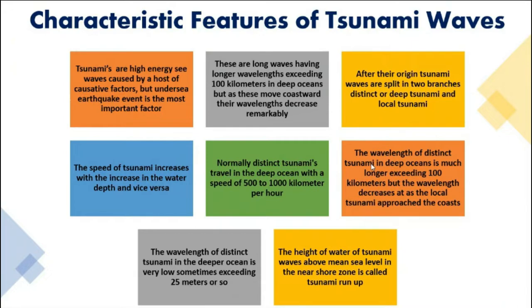A wavelength of more than 100 kilometers makes it very difficult to detect such waves when there is already turbulence in the ocean from tidal movements, cyclones, and other phenomena. In deep oceans, the wavelength is more than 100 kilometers, but as the waves move toward coastal areas, the wavelength decreases remarkably and the amplitude of the tsunami wave increases when it approaches coastal areas.